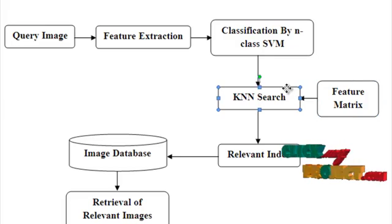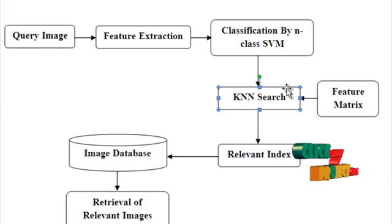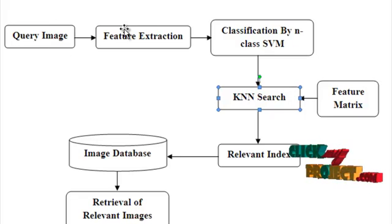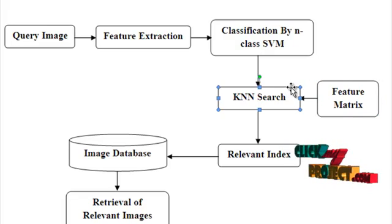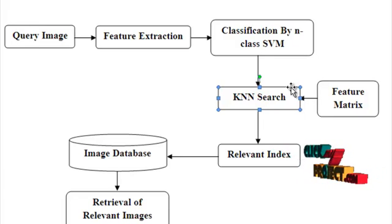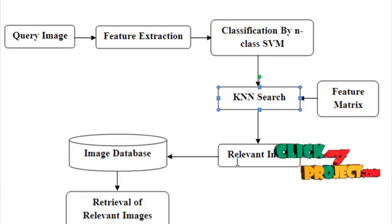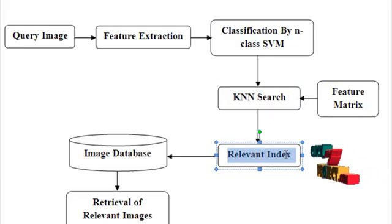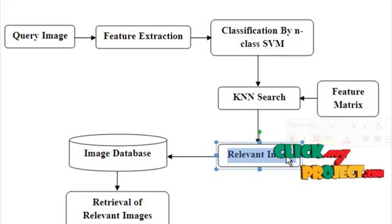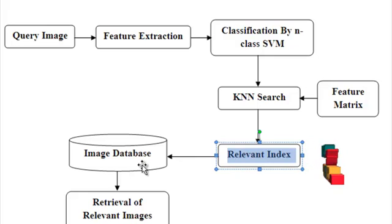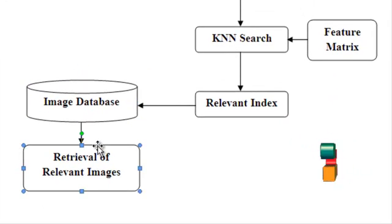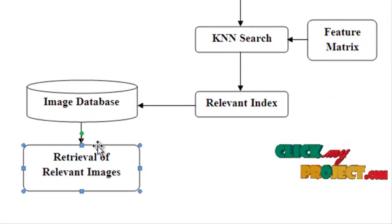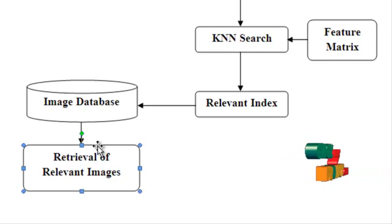The KNN search algorithm takes two inputs: the query image feature vector and the feature matrix from the database. The KNN algorithm searches for the nearest neighbors for the given query image by computing the Euclidean measure. After this, the index of relevant images is obtained, and we can easily retrieve the relevant images from the image database. The result — the most relevant images for the given query image — is displayed in a separate figure window.